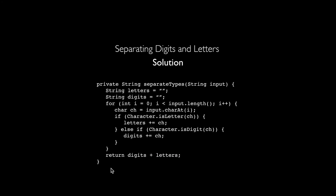This is what our final solution looks like: a private string method that takes an input and returns a string output. It uses a for loop with the very common pattern of iterating through a string, getting the character at every index, and doing some manipulation with that character. Thanks so much for watching.